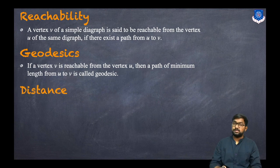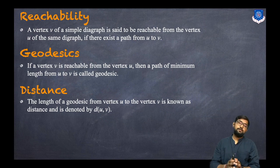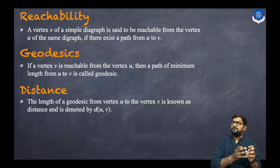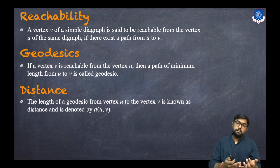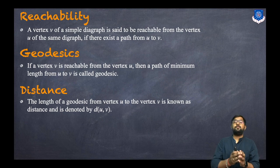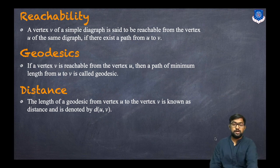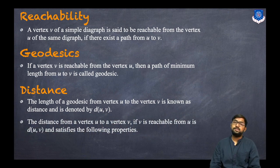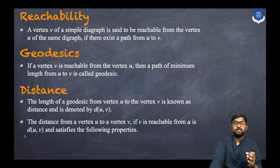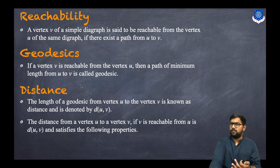Now, what is a distance? The length of a geodesic from vertex U to vertex V is known as the distance, and it is denoted by the symbol d(U, V). The distance from U to V, if V is reachable from U, satisfies the following properties.